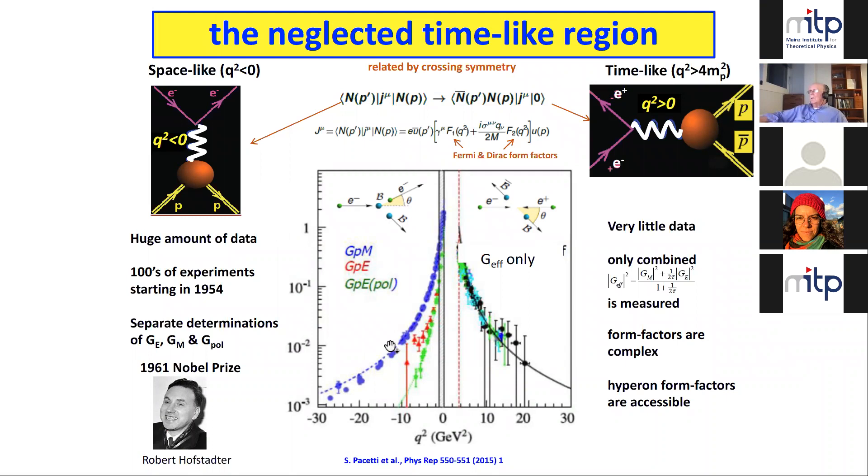In the space-like region, we know the form factors quite well, with the proviso we don't know the radius of the proton so well. There have been hundreds of experiments, and these experiments can measure the electric form factor and the magnetic form factor and the polarization form factor. They also gave Professor Hofstadter a Nobel Prize. But in the time-like region, we're not so fortunate - very little data, and we can't measure the individual form factors except in rare cases, and not with great precision. So we measure this effective form factor.